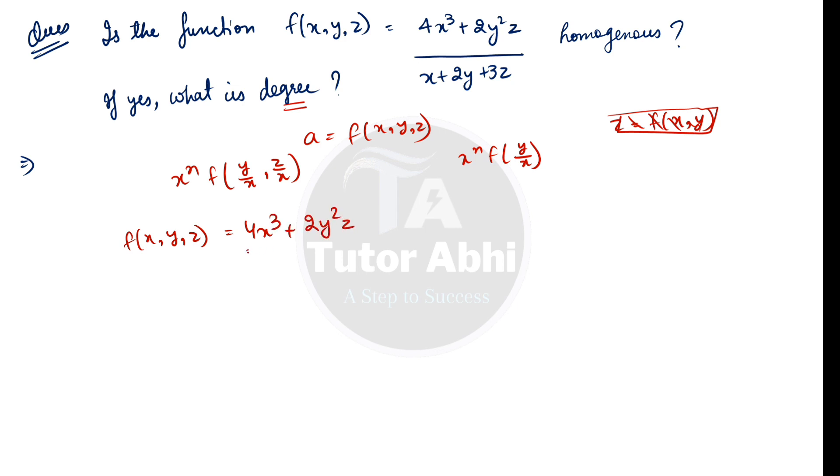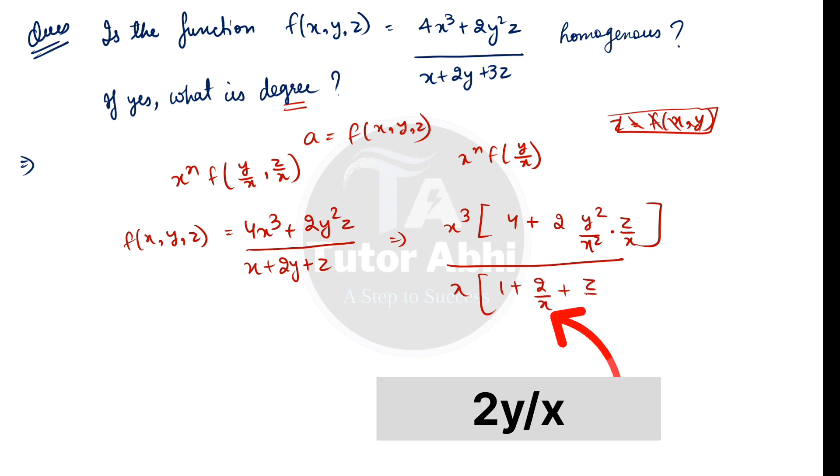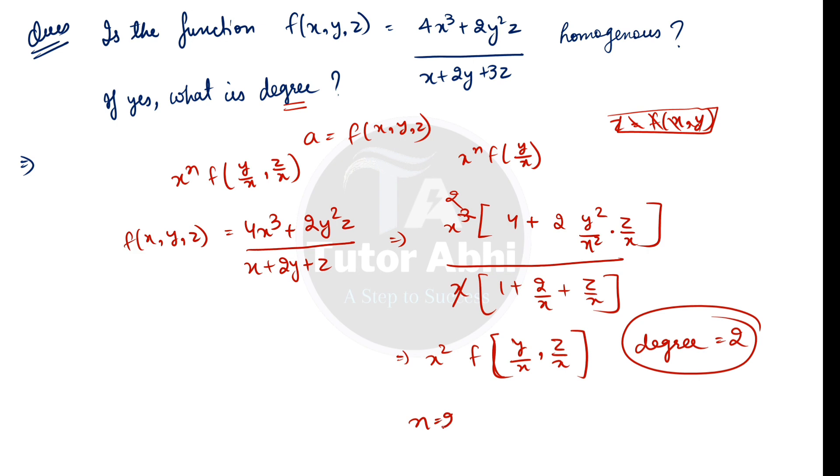We take the function f(x, y, z) equals 4x cube plus 2y square z upon x plus 2y plus 3z. From the numerator, taking x cube common gives us four plus 2 y squared over x squared times z over x. In the denominator, taking x common gives us one plus 2y over x plus z over x. After canceling x, we get x square times function of y upon x and z upon x. So the degree is equal to 2.